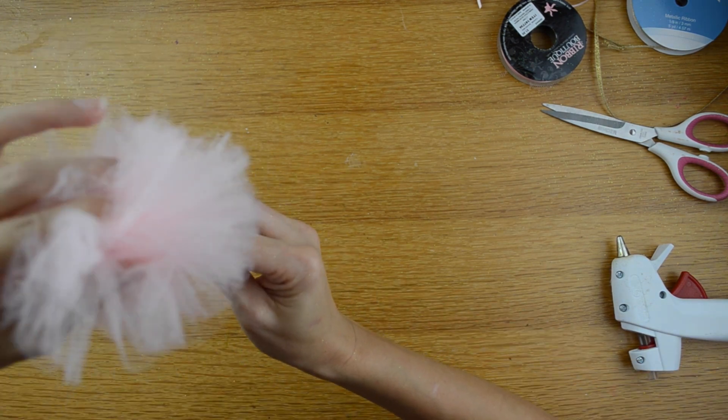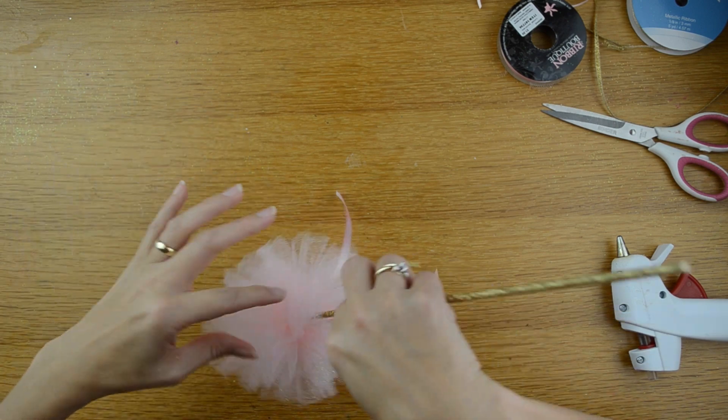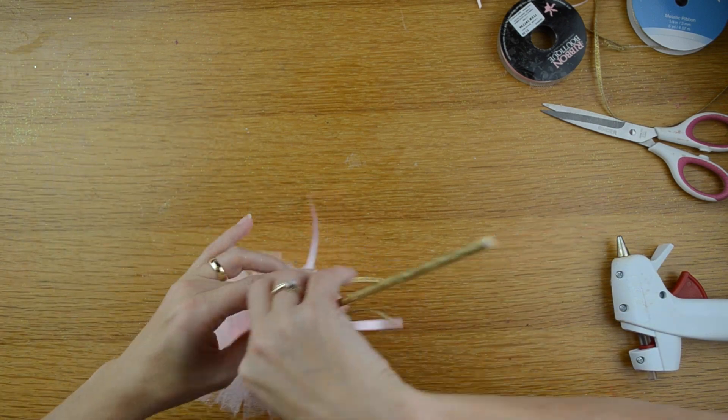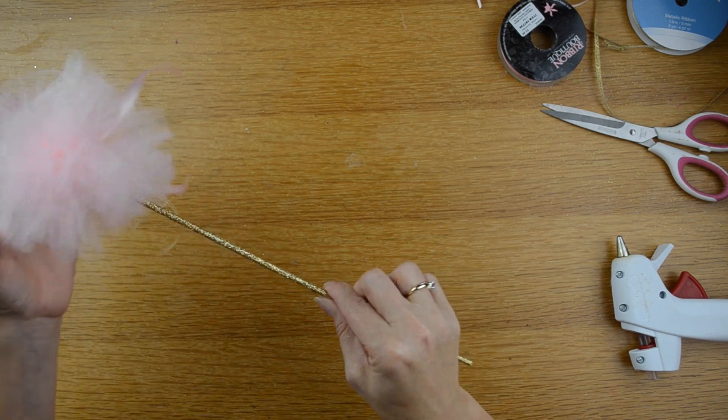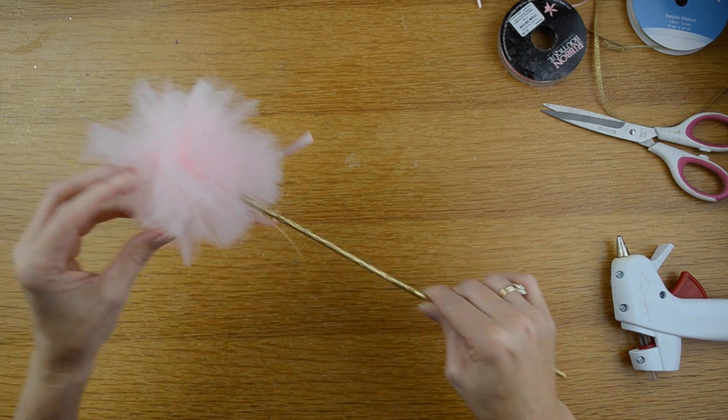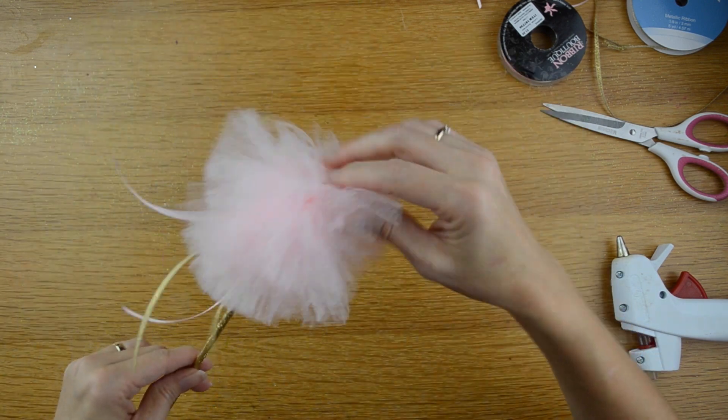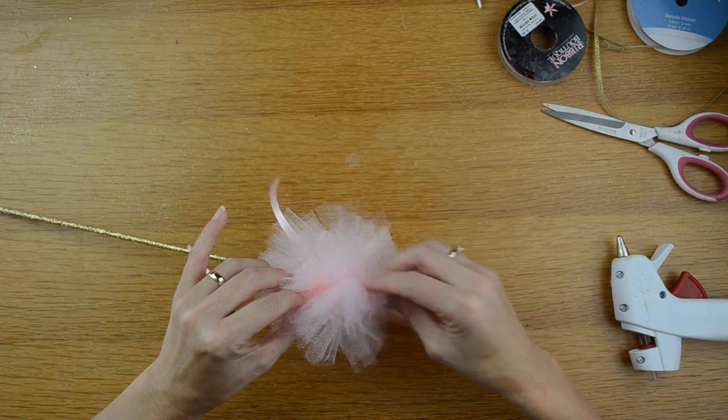Push the tulle down around it and we're just going to make sure that it stays like that. And just let that dry. And then you'll fluff your pom back out and then you have your pom. How cute are those?